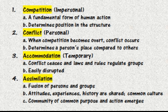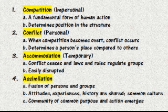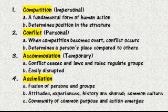The second stage is conflict. Here Park talks about a more personal point of view. He says when competition becomes overt — when we can actually articulate what it is that other people have that we want — conflict starts to begin. This determines your individual place compared to other people, not groups. In this phase, status, subordination, superordination, and control are distinctive characteristics of what happens to you and others when that conflict occurs.